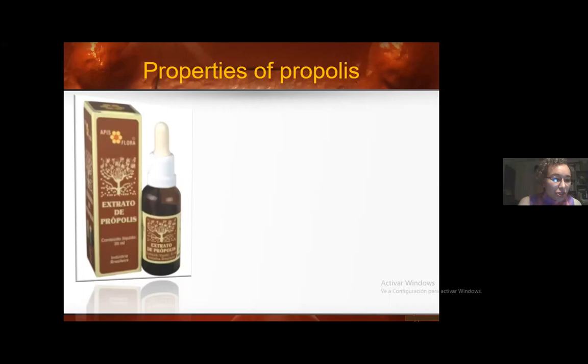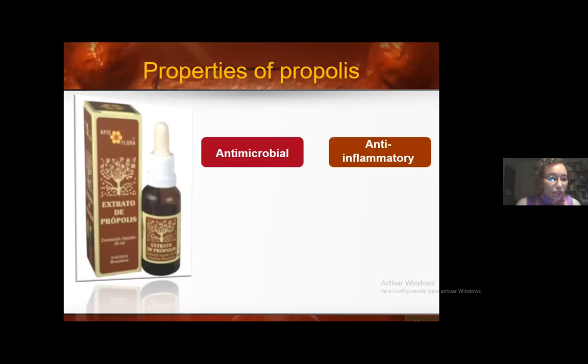Propolis is a resinous mixture of double origin — vegetable and animal — consisting of vegetable and volatile oils collected by bees from shoots and exudates from plants, processed by bees' salivary enzymes and mixed with beeswax. One of the main roles of propolis is to protect the bee colony from infectious diseases due to its high antiseptic efficacy. Due to its multiple chemical components, propolis is considered the most valuable product of bees with a wide variety of therapeutic actions.